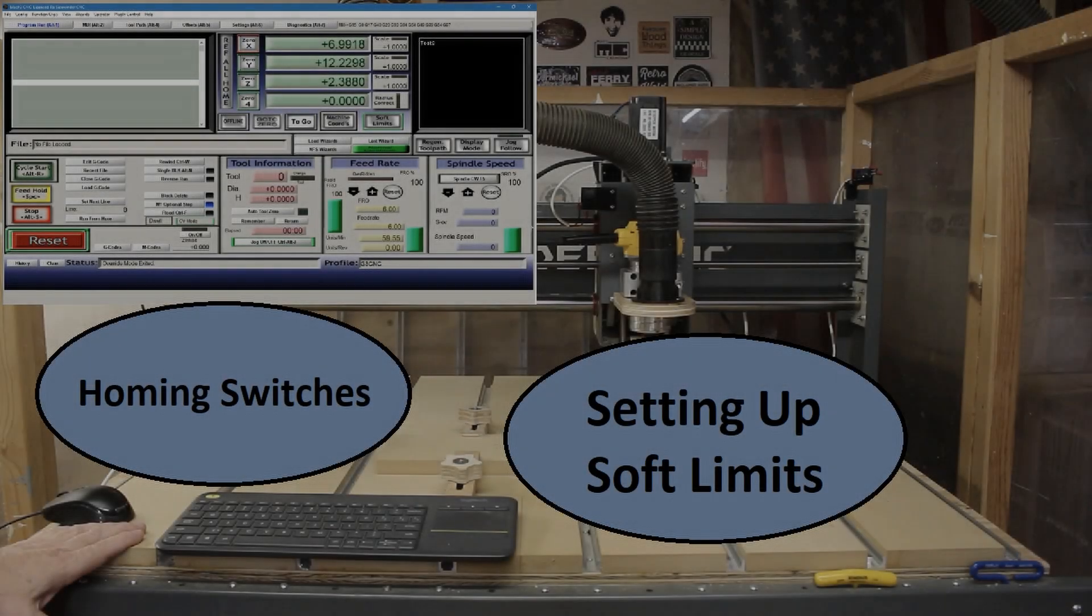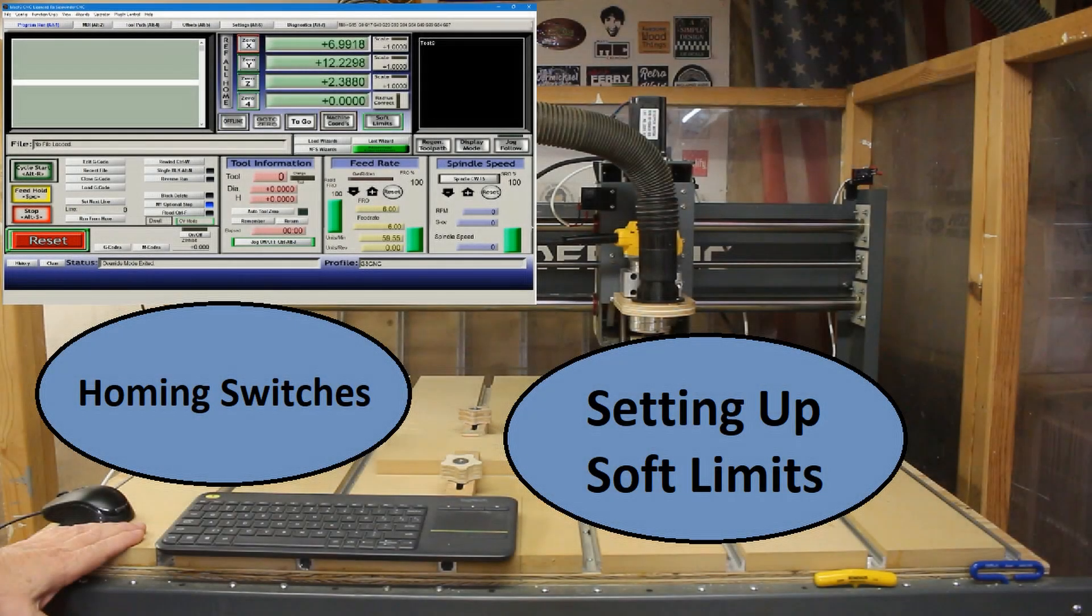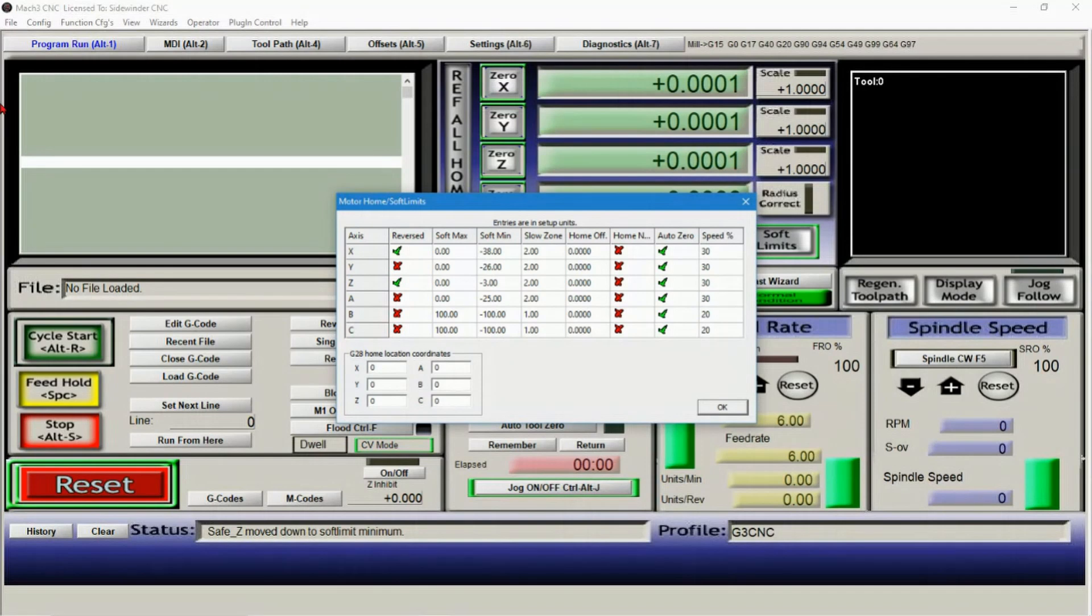In a recent video I talked about the homing switches I installed on one of my CNC machines and how I set up my soft limits. I had some questions about why my machine soft limits were negative numbers, so I thought I would go into a little more detail and try to explain the different soft limit settings.